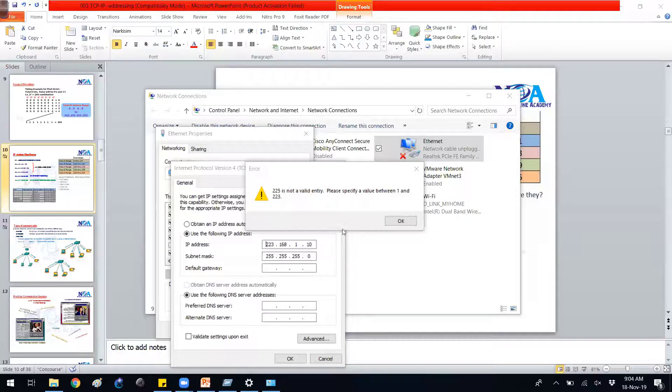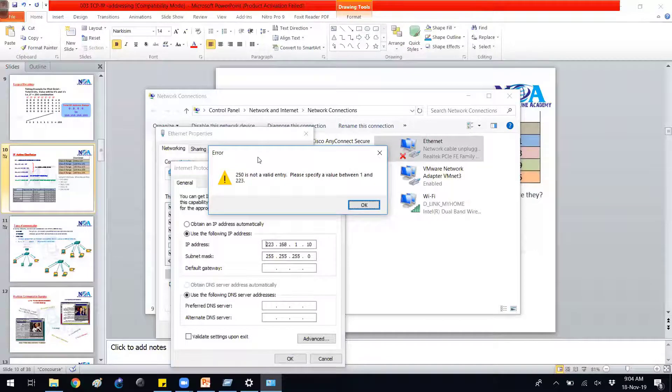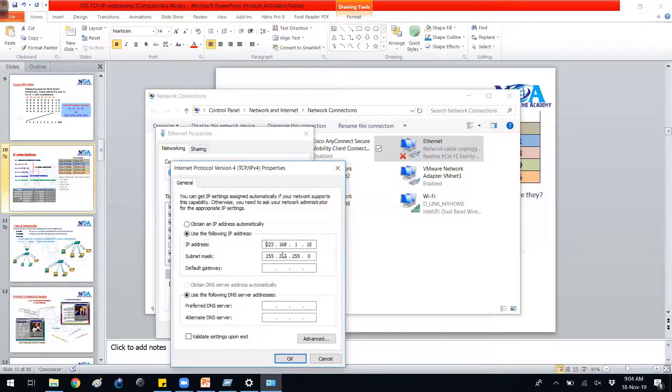So basically it should be anything from 1 to 223. 223 is the last address of the Class C. So we cannot use Class D. So even if you try any address like 250 also, the device is not going to accept. So 250 is not a valid entry, please specify the values only in between 1 to 223.